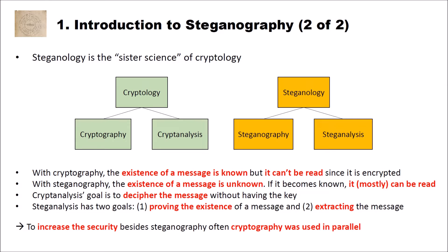Steganology is the sister science of cryptology. Both consist of two parts: cryptology consists of cryptography and cryptanalysis, and steganology consists of steganography and steganalysis. With cryptography, the existence of a message is known but it cannot be read since it is encrypted. In contrast, with steganography the existence of a message is unknown — you do not even know that a message exists. With cryptography you can see there is something encrypted; with steganography you cannot see it at all.